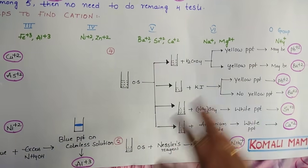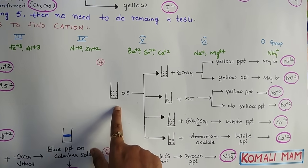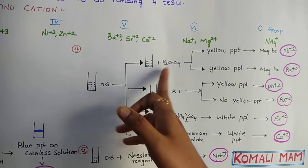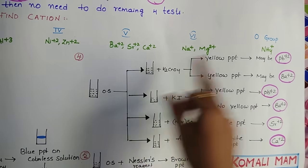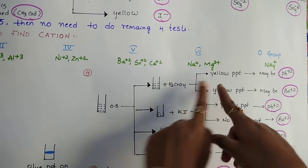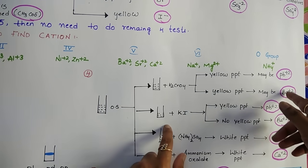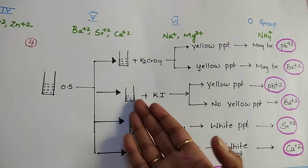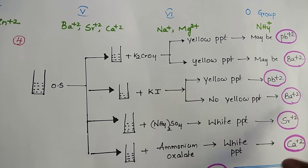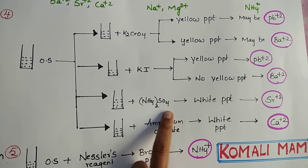For test four, take the original solution in four test tubes. Add potassium chromate solution — if you get a yellow precipitate immediately, there are two possibilities: lead (Pb²⁺) or barium (Ba²⁺). To confirm which one, take another test tube with the original solution and add KI. If a yellow precipitate forms with KI, then lead (Pb²⁺) is confirmed. If no yellow precipitate forms with KI, skip that test and proceed.